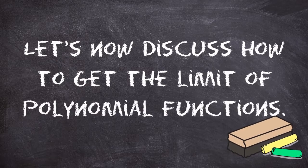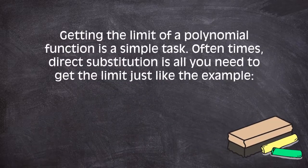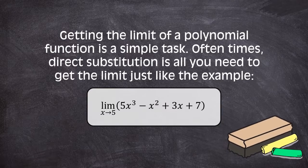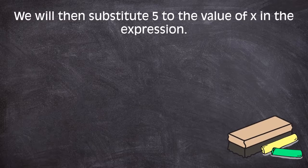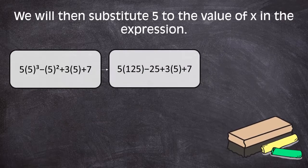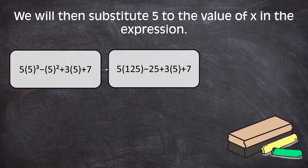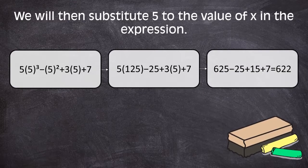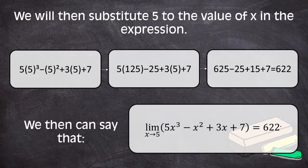Let's now discuss how to get the limit of polynomial functions. Getting the limit of polynomial function is a simple task. Often times, direct substitution is all you need to get the limit. For example, the limit of 5x cubed minus x squared plus 3x plus 7 as x approaches 5. We will then substitute 5 to the values of x in the expression. So we get 5 times 5 cubed minus 5 squared plus 3 times 5 plus 7. By applying the power rule, we get 5 times 125 minus 25 plus 3 times 5 plus 7. Then we apply the multiplication: 625 minus 25 plus 15 plus 7. By adding, we get 622. Therefore, the limit of 5x cubed minus x squared plus 3x plus 7 as x approaches 5 is equal to 622.